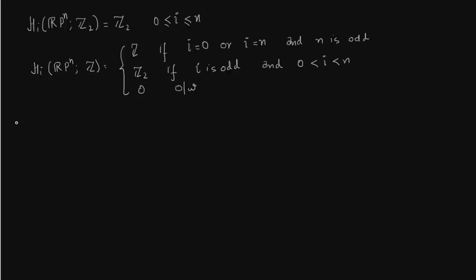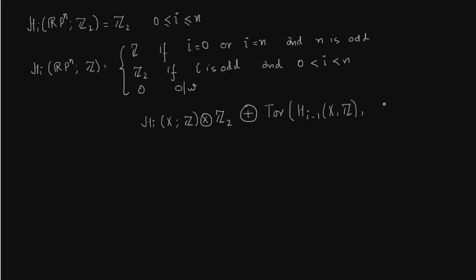To calculate the i-th homology group with coefficients in Z2, we apply the Universal Coefficient Theorem to X = RP^n. We go through cases. Case 1: i = 0 or i = n where n is odd.